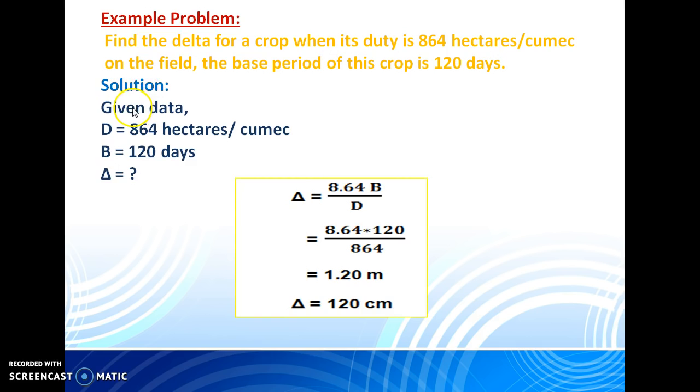First, you write down whatever the given data. Given data: D equals 864 hectares per cumec. B equals 120 days. Then, what is delta?